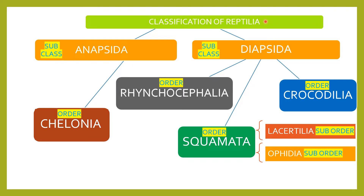Classification of class Reptilia is on the basis of temporal fossae. Reptilia is divided into two subclasses: one is Anapsida and another one is Diapsida. Anapsida includes one order, that is Kironia. Diapsida includes three orders: first is Rhynchocephalia, second is Crocodylia, and third is Squamata. The Squamata order is once again divided into two suborders — Lacertilia and Ophidia.